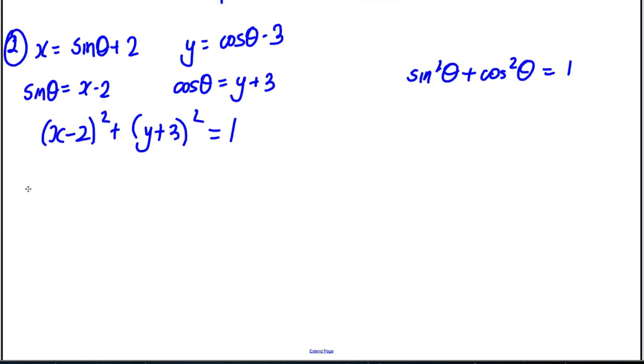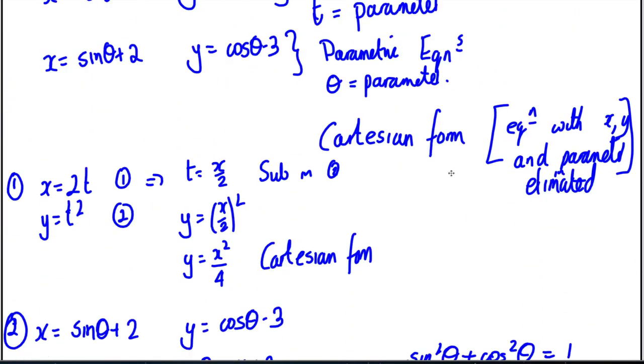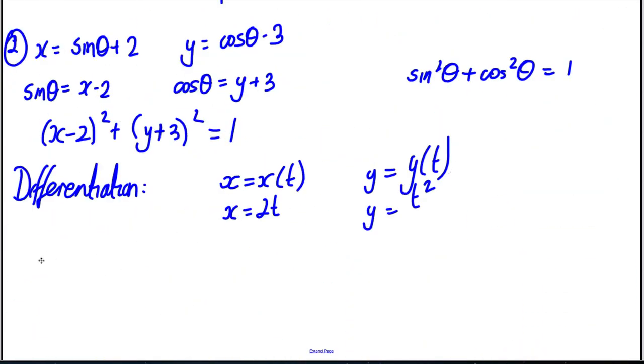Okay, now the last thing I need to be able to do is differentiation with these. And this is just applying the chain rule. Say I had x is a function of t and y is a function of t. In the case we had above, let's say we're going to use x equals 2t and y equals t squared. Okay, then if I want to work out dy by dx, it's dy by dt divided by dx by dt. That's the formula we need to know and use. It's just the chain rule.